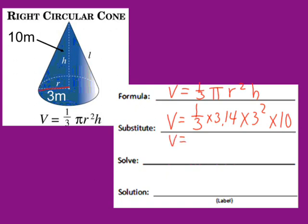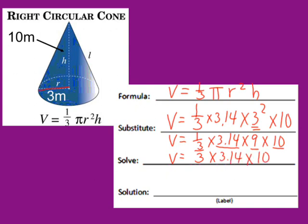We need to do our exponent first, so it's one-third times 3.14 times 3 squared, which is 9, times 10. We've got four factors: one-third, 3.14, 9, and 10. I can multiply in any order — I'll multiply one-third times 9, which is 3, then 3 times 10, which is 30, times 3.14. The volume of this cone is 94.2 cubic meters.